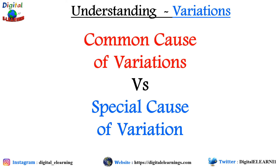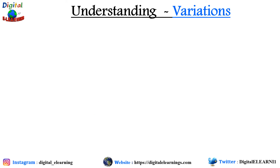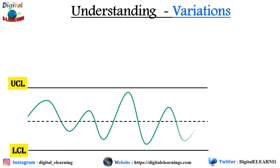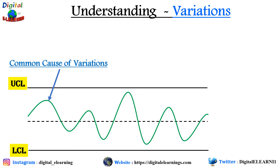Let us now understand the difference between common cause of variation and special cause of variation. For that we need to first understand the control chart. Let's draw a control chart — we have the lower control limit, the middle line, and the upper control limit. The first process we have is the green process, where everything is under the limits. But we still have some variation — this is known as common cause of variation, also called non-assignable cause. It is random in nature, always present, always predictable, and occurs out of a normal process. Here, management — not the workers — are responsible for these causes.